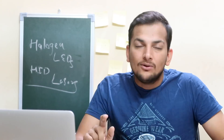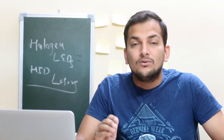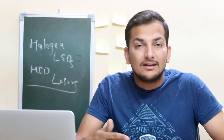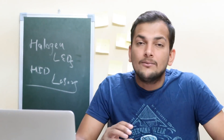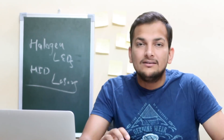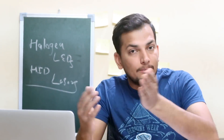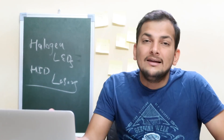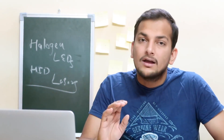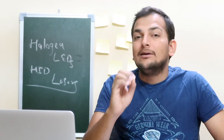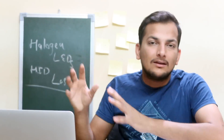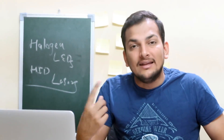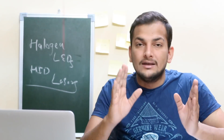The negatives of halogen are that it consumes a lot of energy, so people avoid it when energy efficiency matters. Its lifespan is also shorter compared to other options like LED and HID. Additionally, halogen is not as bright compared to the other headlight types we will discuss.